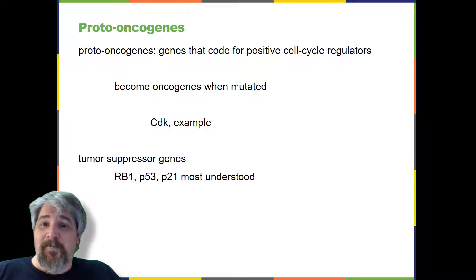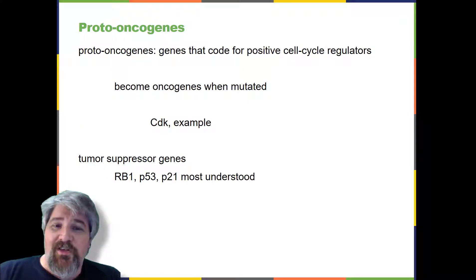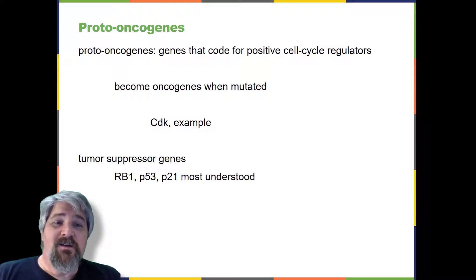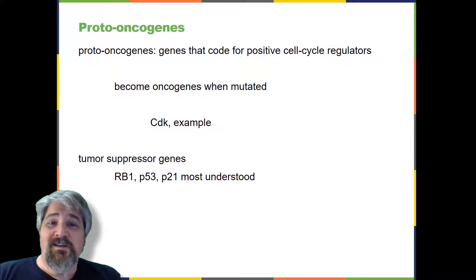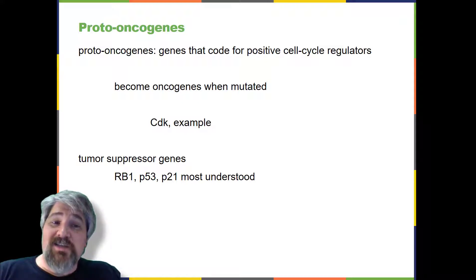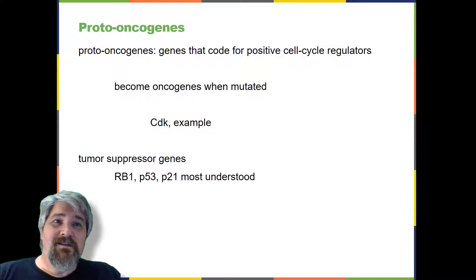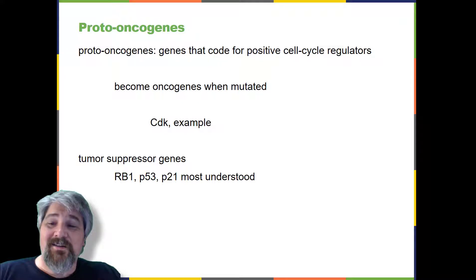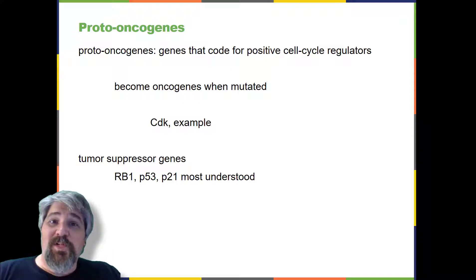The genes that code for positive cell cycle regulators are called proto-oncogenes. Proto-oncogenes are normal genes that, when mutated, become oncogenes — genes that cause a cell to become cancerous. Consider what might happen to the cell cycle in a cell with a recently acquired oncogene. In most instances, the alteration of the DNA sequence will result in a less functional or non-functional protein. It's worth noting that most mutations are neutral, for reasons that will become apparent in later chapters.